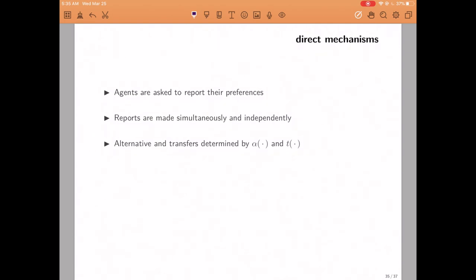However, we're going to restrict attention to a very simple class of mechanisms called direct mechanisms. In a direct mechanism, the rules are very simple. Each agent is simply asked to report their own preferences, which sometimes I will call their types. The reports are simultaneous and independent, and then an outcome is determined based on these preferences. So what really defines a direct mechanism is the fact that the message space is just a set of possible values that the individuals have.